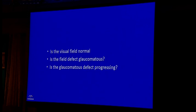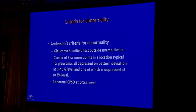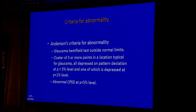To determine whether a visual field is normal, abnormal, or glaucomatous, and whether it is progressing over time, the key criteria for abnormality are: an abnormal glaucoma hemifield test, and most importantly, a cluster of points — two or three or more — that are significantly and abnormally depressed from age-corrected normal values and located in an expected area for glaucomatous damage, such as a paracentral area, nasal segment, or arcuate pattern.